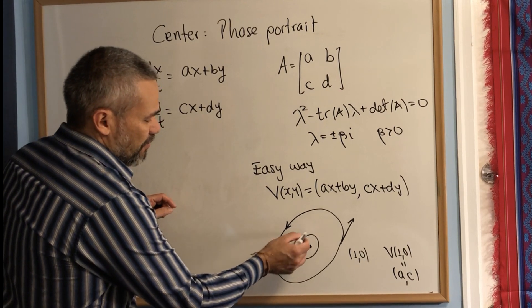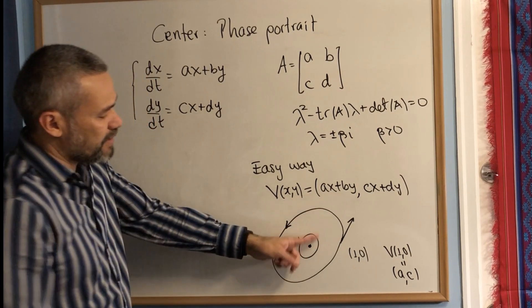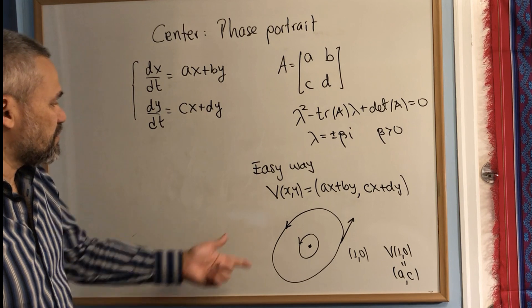We have this orbit, which is the equilibrium point, and then all the other orbits look like an ellipse.